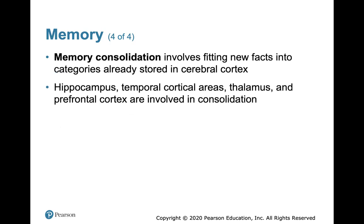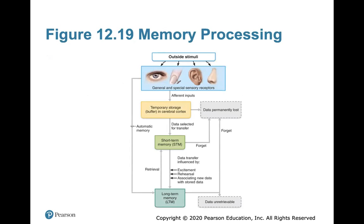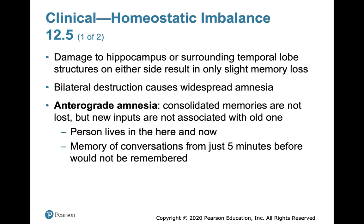Memory consolidation involves fitting new facts into categories already stored in the cerebral cortex. The hippocampus, temporal cortical areas, thalamus, and prefrontal cortex are involved in consolidation. Damage to the hippocampus or surrounding temporal lobe structures on either side results in only slight memory loss, but bilateral destruction causes widespread amnesia. Anterograde amnesia means consolidated memories are not lost, but new inputs are not associated with old ones — the person lives in the here and now and a conversation from just five minutes before would not be remembered.